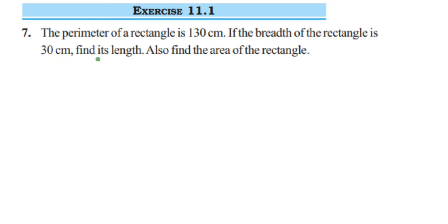So they're asking us to find two things: one is the length of the rectangle, and second is the area of the rectangle. To find the area, we need to know the length. We're also given that the perimeter of the rectangle is 130 centimeters. Let's write down what we know from the question.